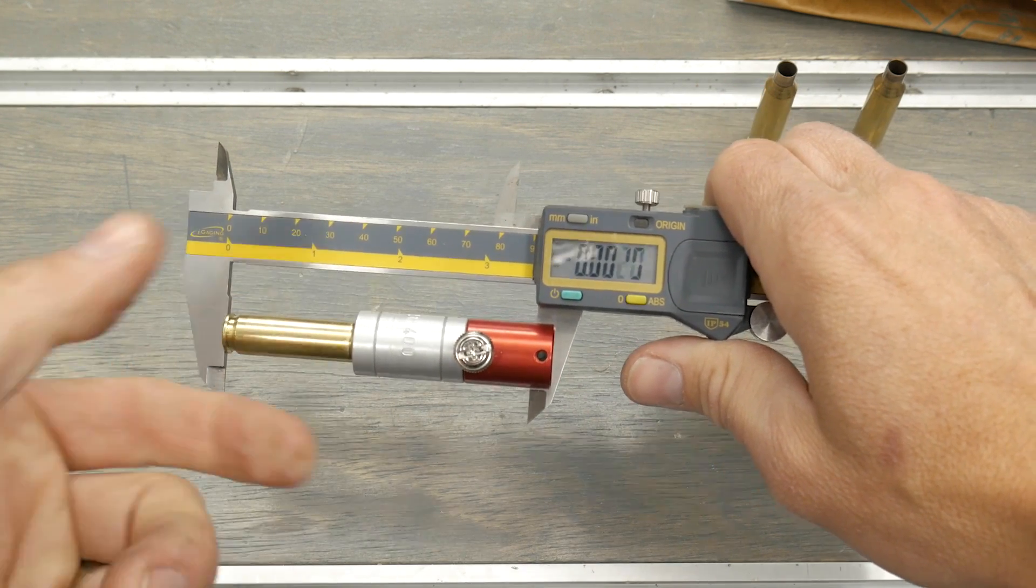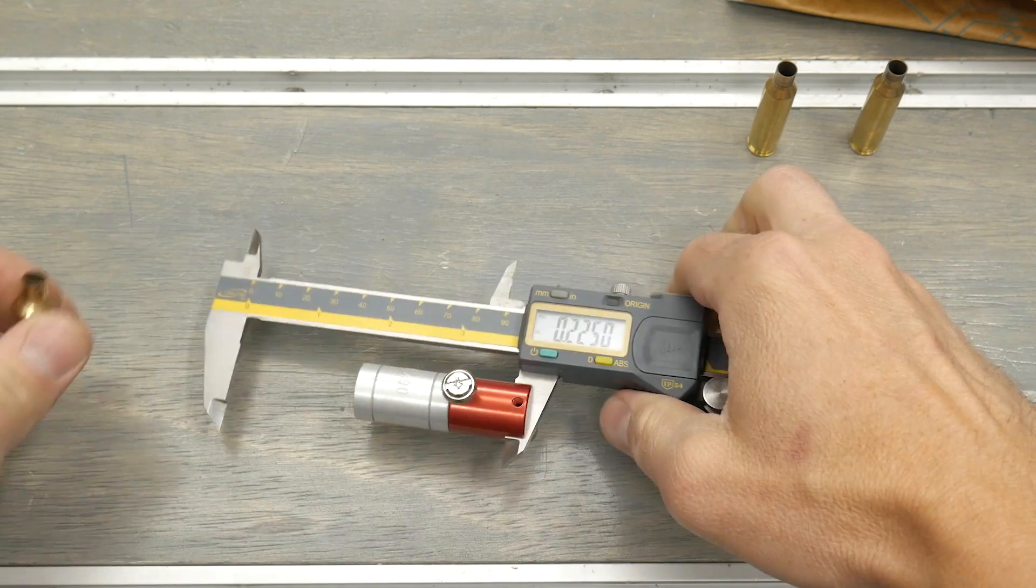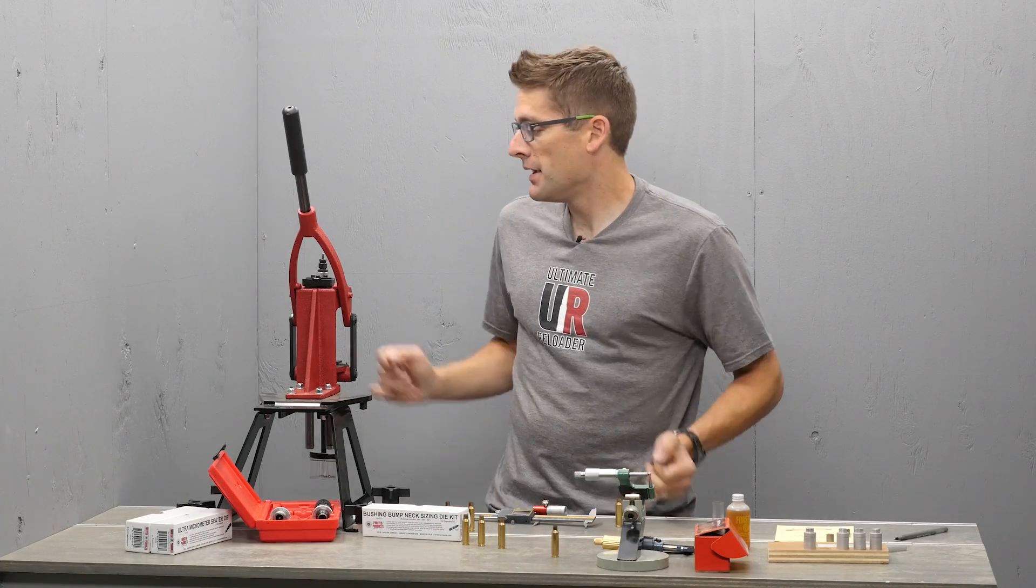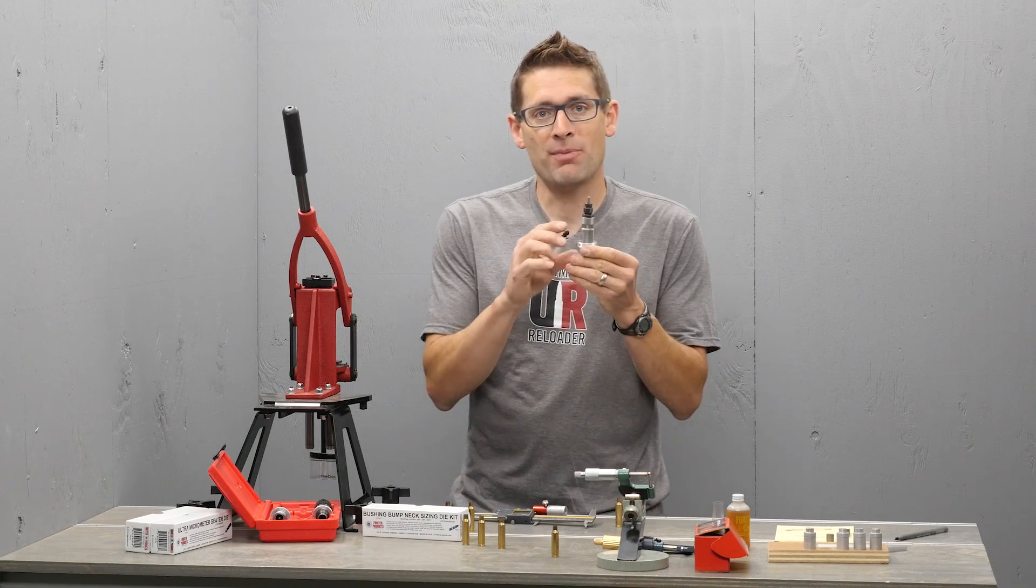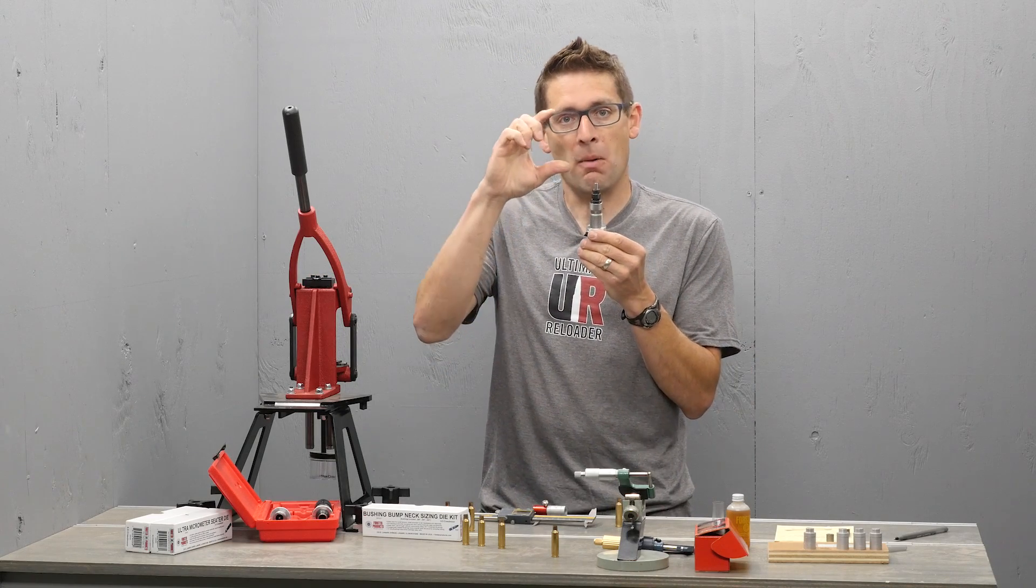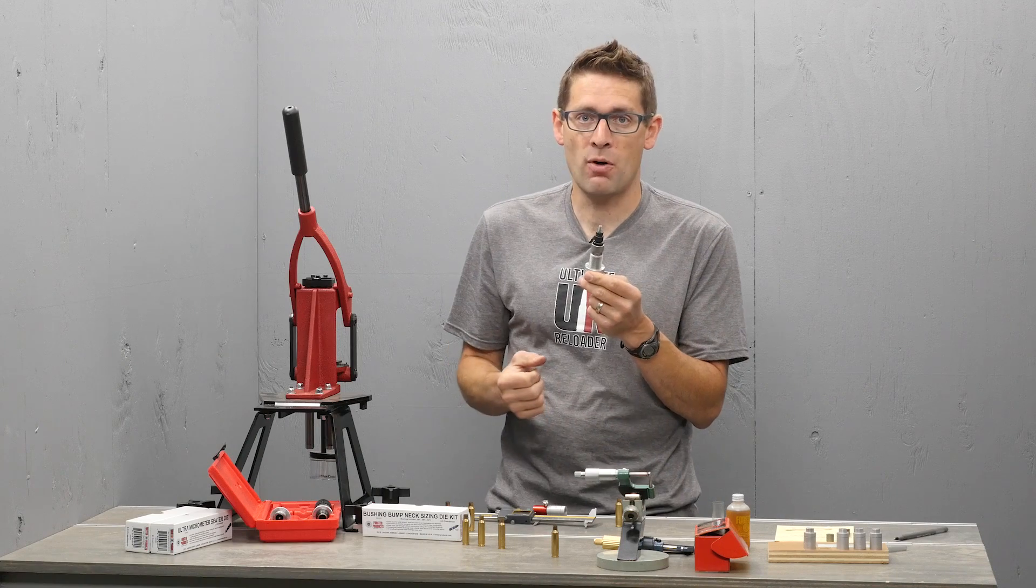If we wanted a little bit less, we could raise the die just a little bit. It's that easy to set up the bushing bump die. And again, if we wanted less bump, we just raise the die. If we want more bump, we can add a little bit more cam over.